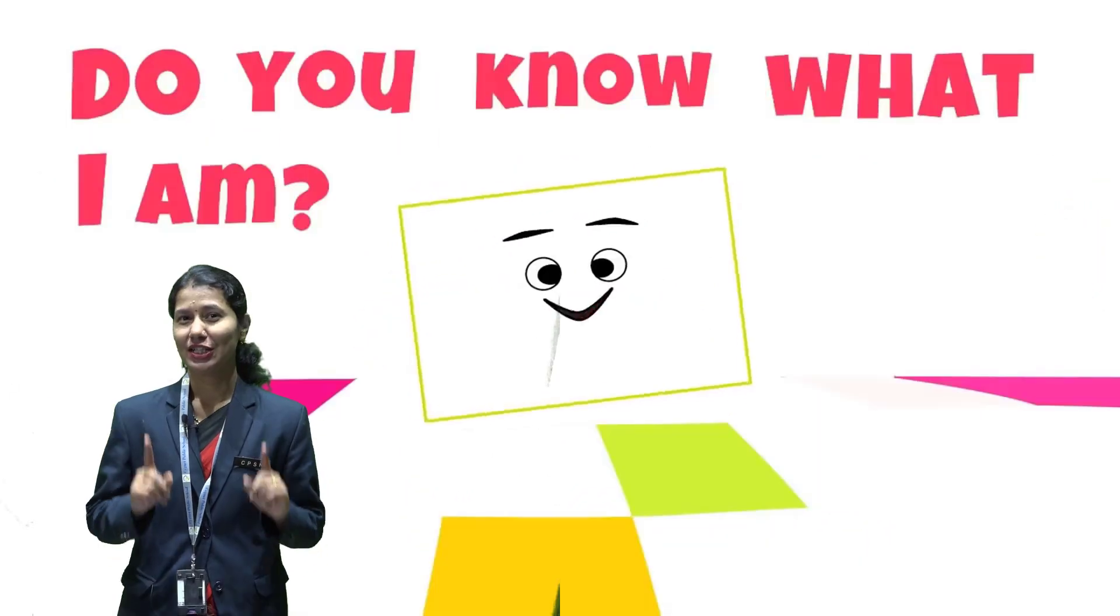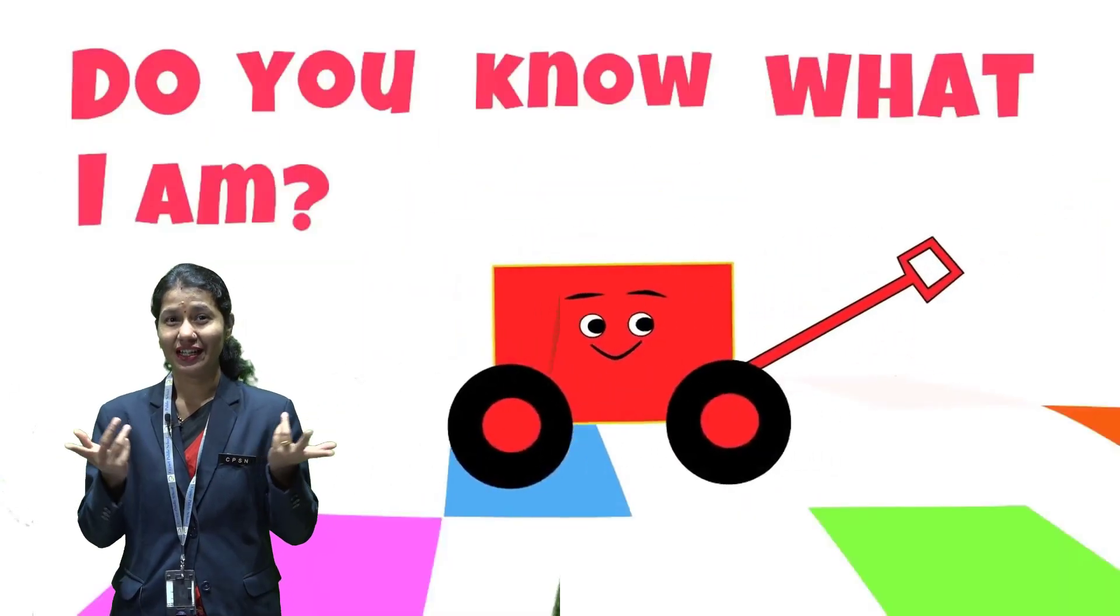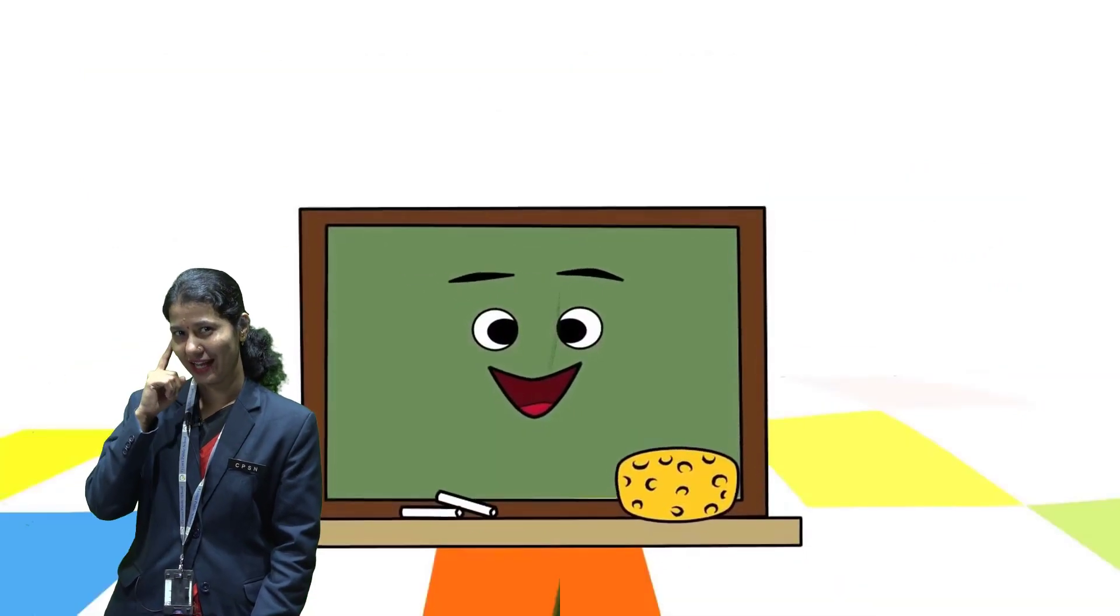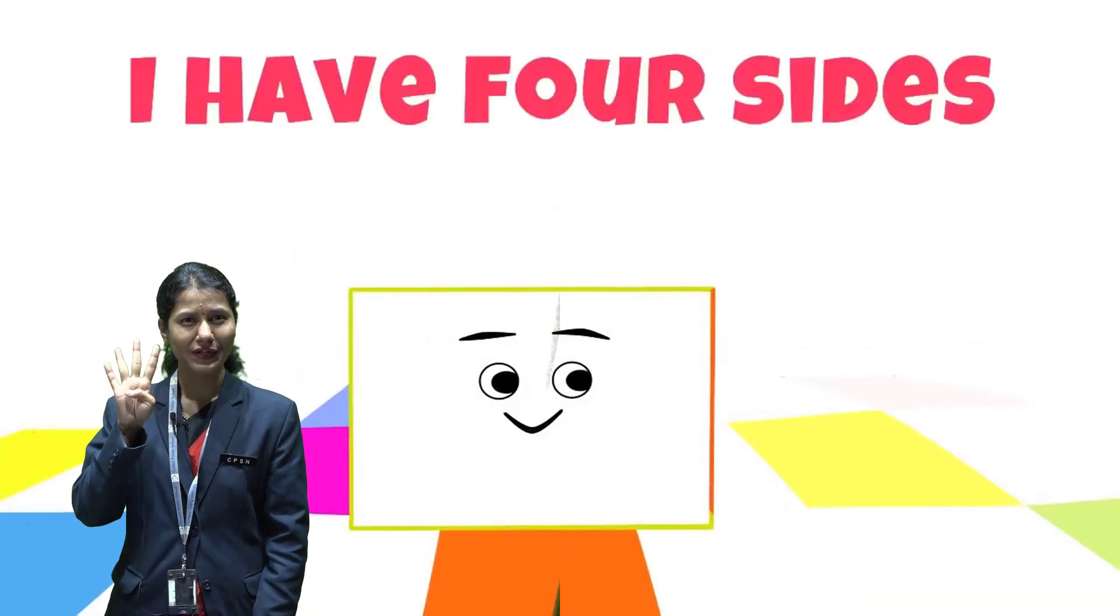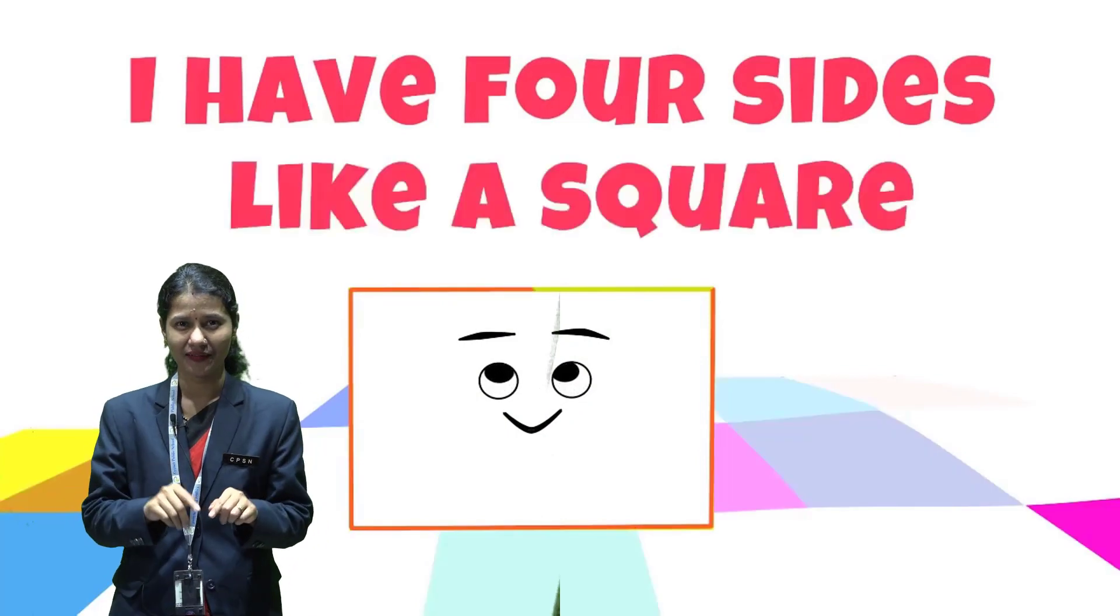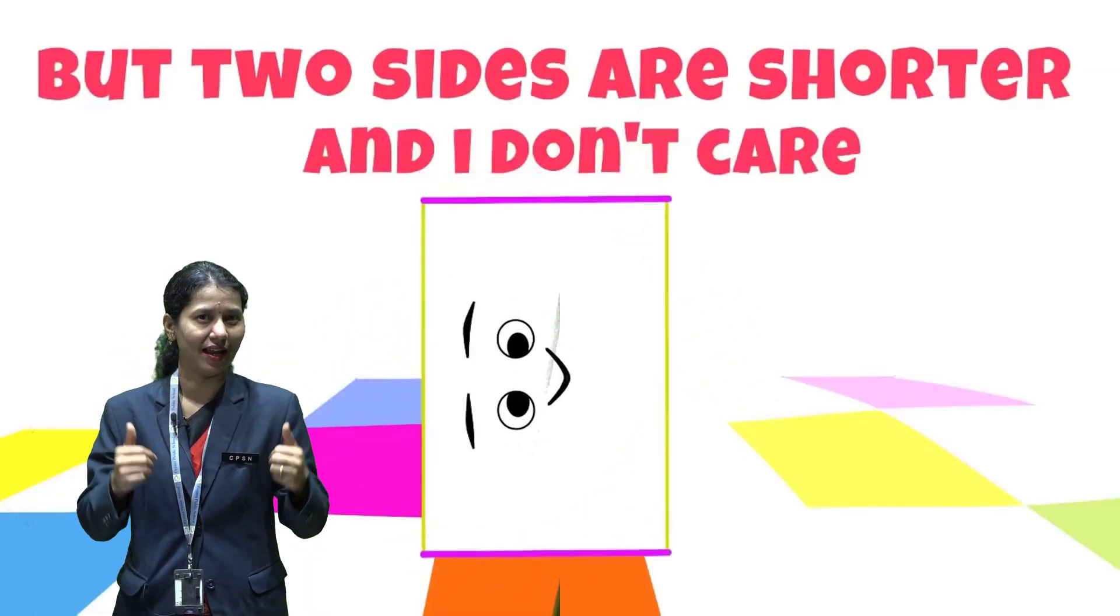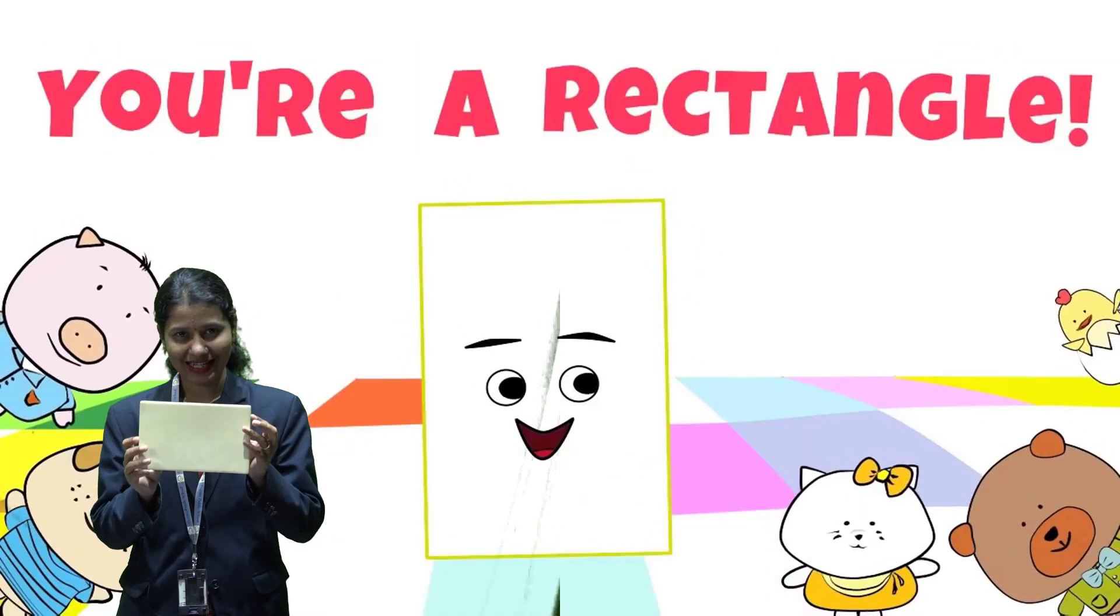Do you know what I am? Say my name if you can. I have four sides like a square, but two sides are shorter and I don't care. What am I? You are a rectangle.